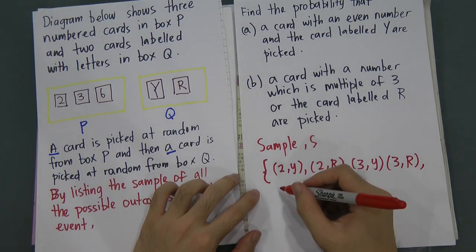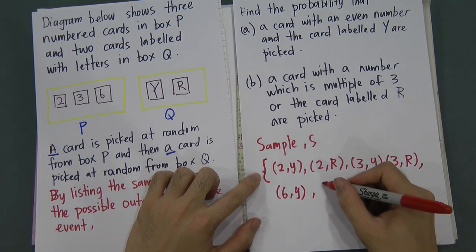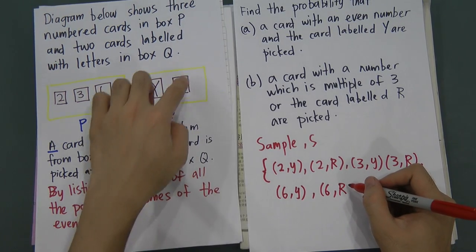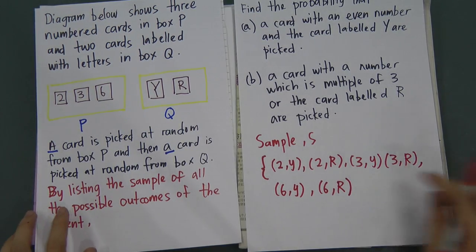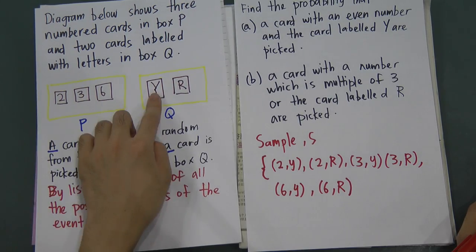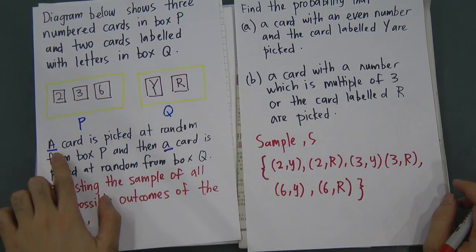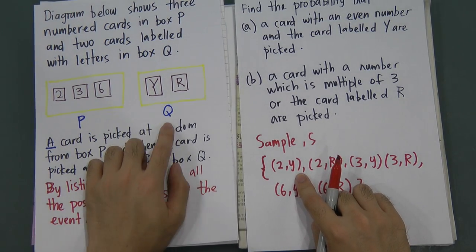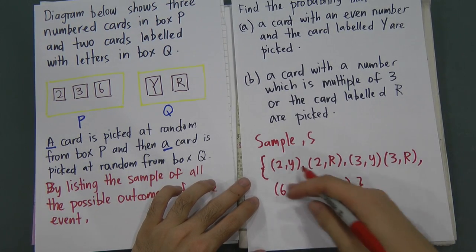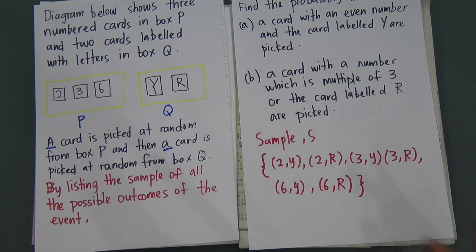Last, if I pick number 6 from Box P, same thing — I can pick Y from Box Q, giving 6Y. And when I pick number 6 in Box P, I can still pick R, giving 6R. So therefore, this is all the possible outcomes: 2Y, 2R, 3Y, 3R, 6Y, 6R. We call this the sample space.